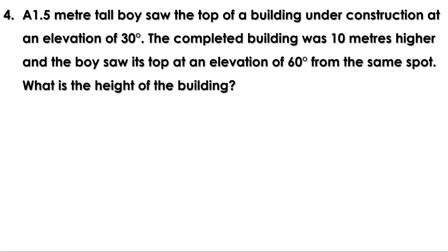From the same spot, what is the height of the building? There is a building under construction and there is a boy. His height is 1.5 meters. He sees the top of the building at an elevation of 30 degrees. The building was completed by adding 10 meters to its height. From the same spot the boy sees the top of the building at an elevation of 60 degrees. We have to find the height of the building.